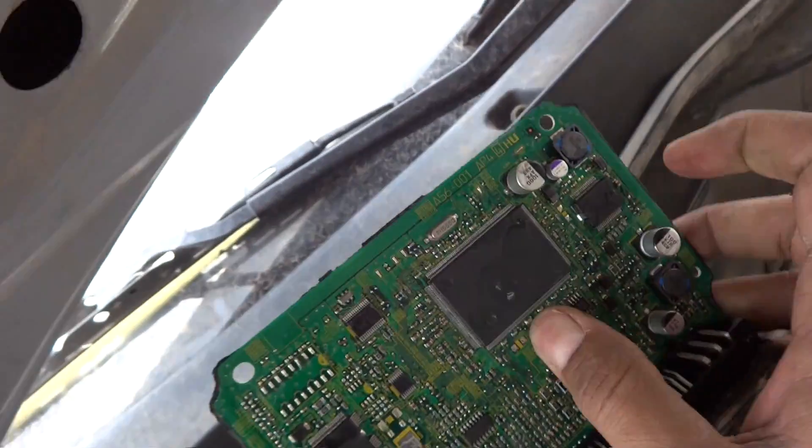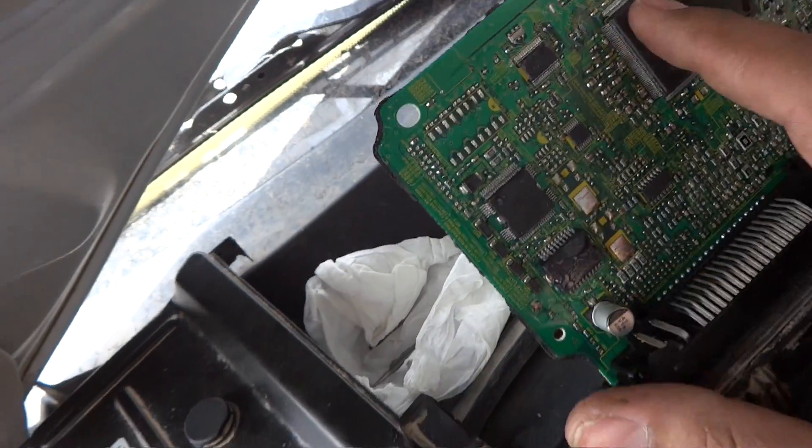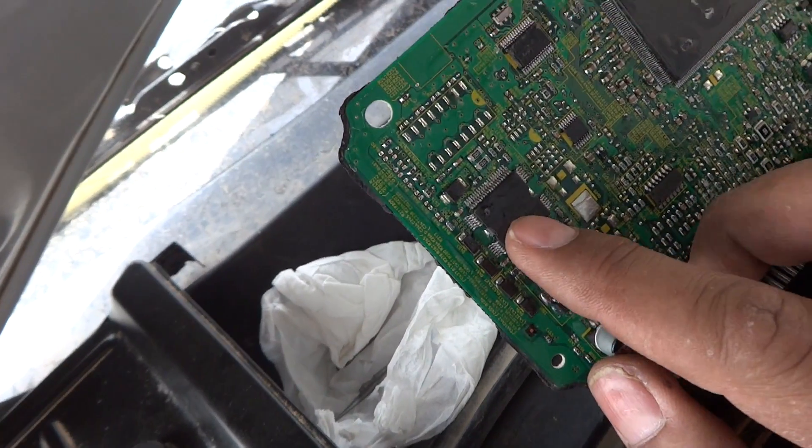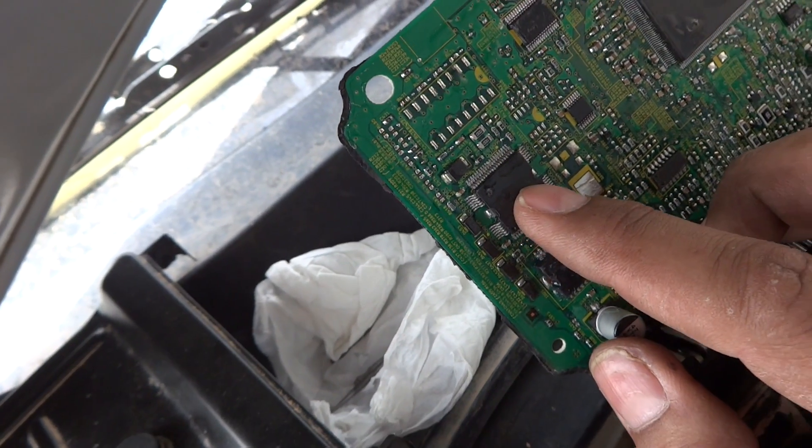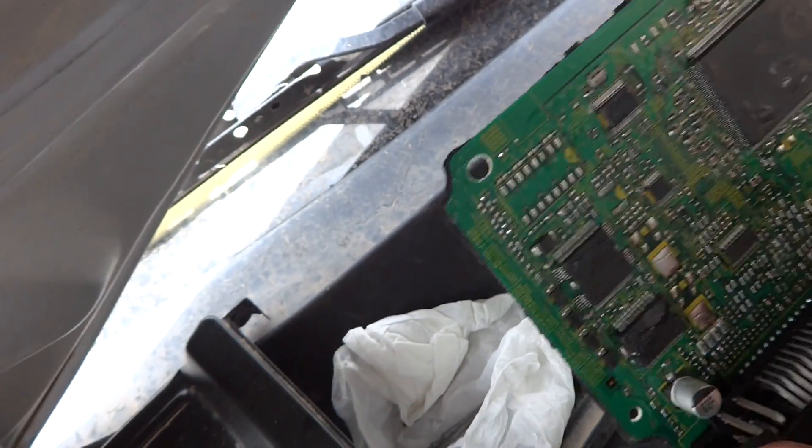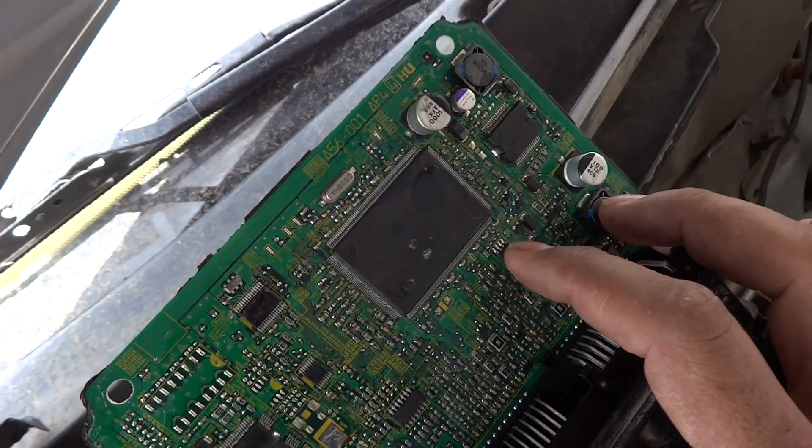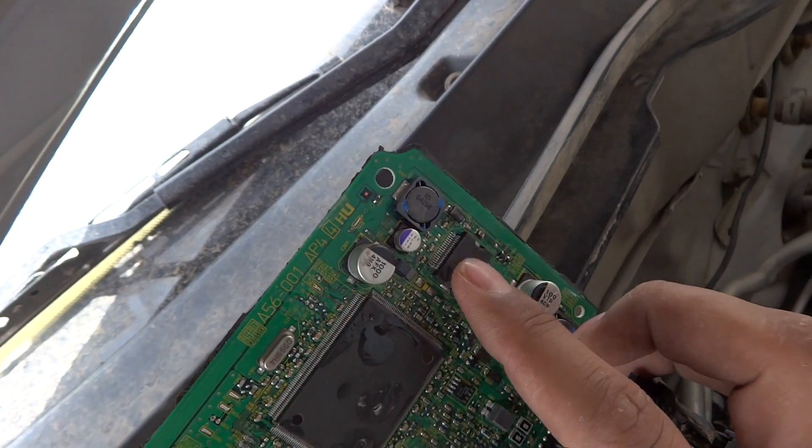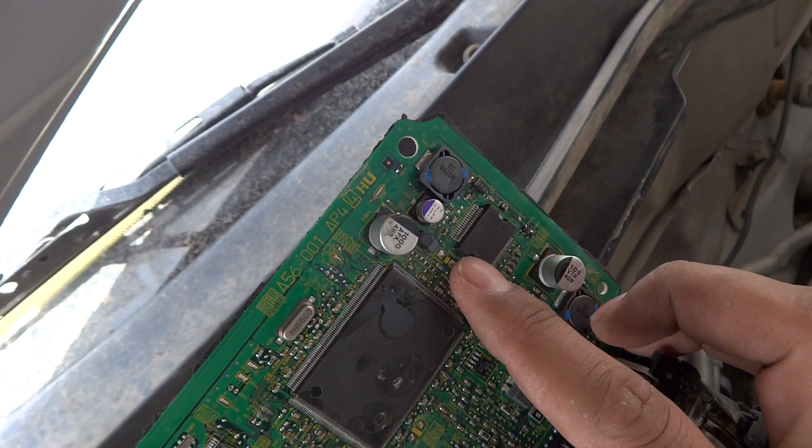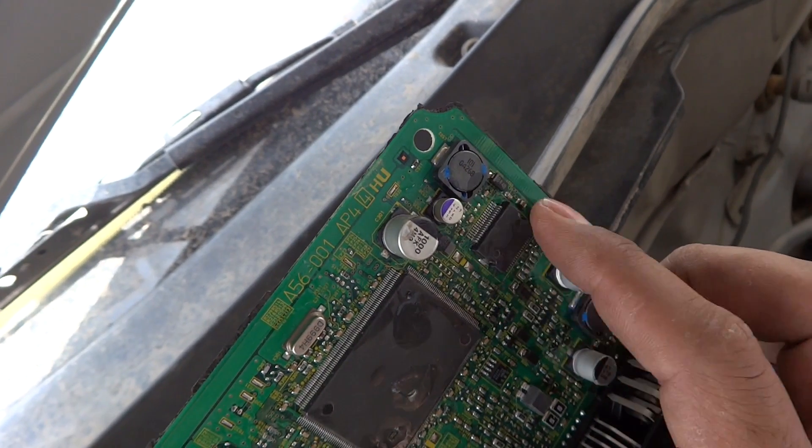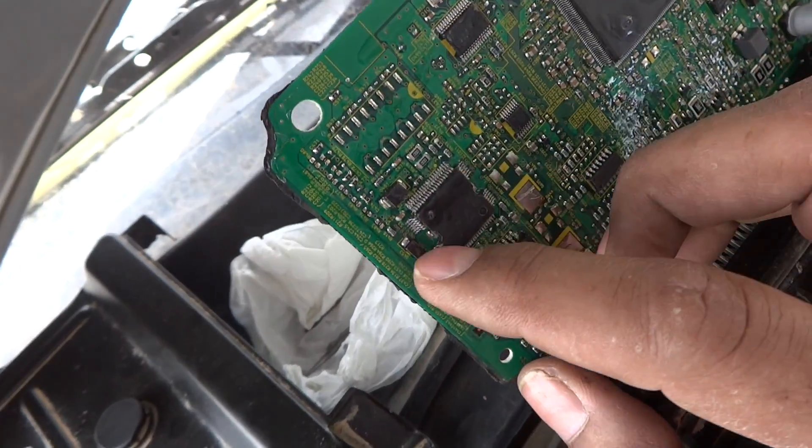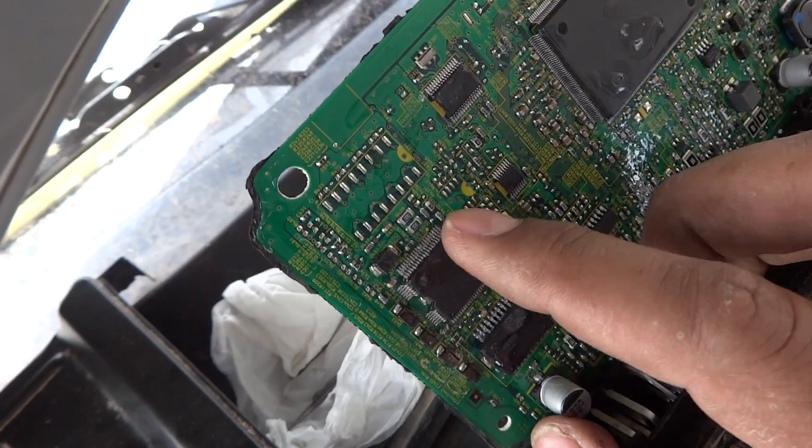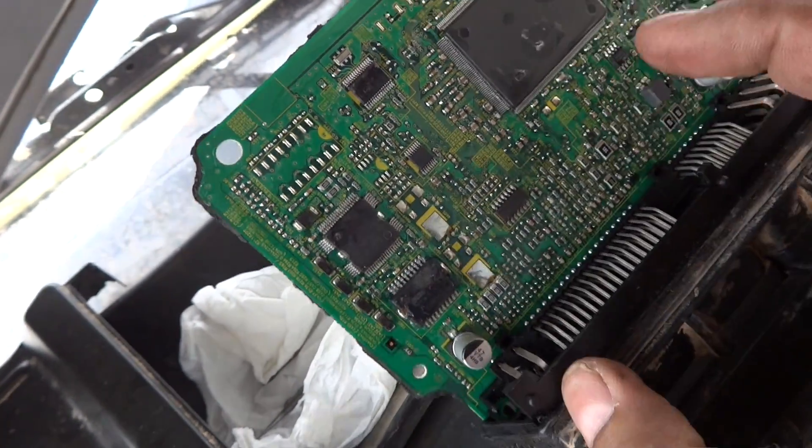Here on the component side, you can see this is the CPU chip, and here is the ignition and fuel injector driver pulse IC. This is the key programming IC, and here is the 5 volt reference IC. If 5 volt was not good, we would have to replace this one.